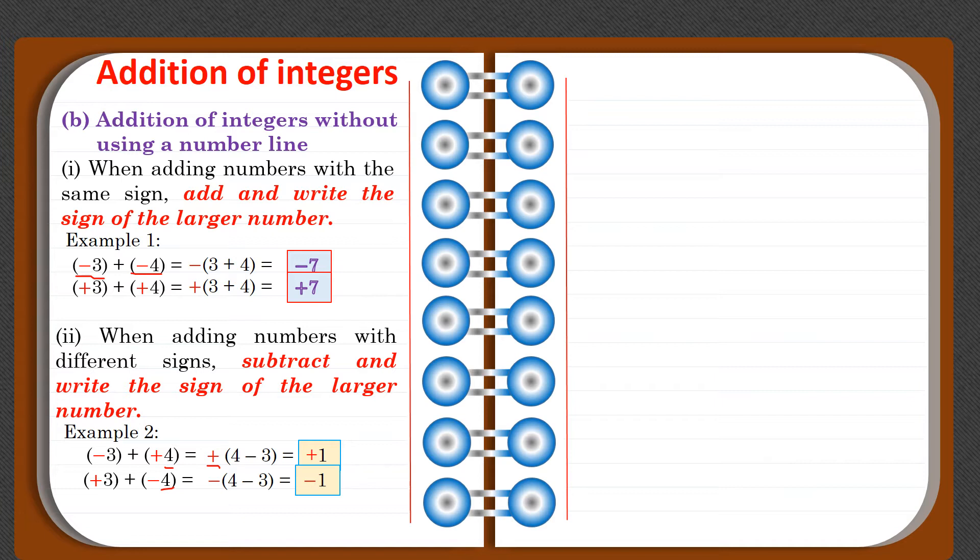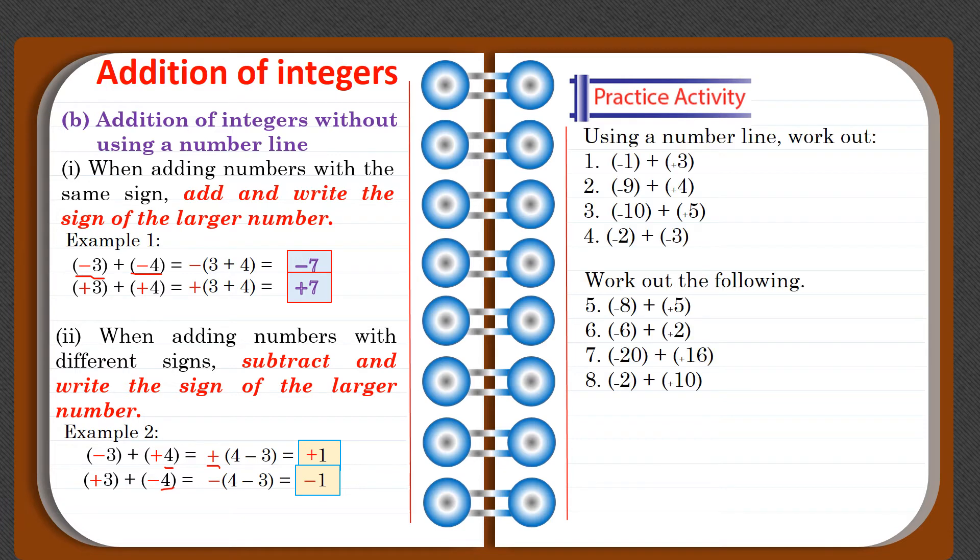So in conclusion: when adding numbers with the same sign, add and write the sign of the larger number. When adding numbers with different signs, subtract and write the sign of the larger number. Do you get it? Let's have practice now.